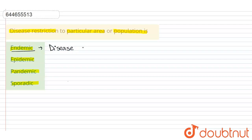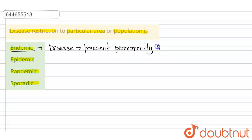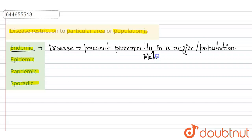Endemic describes a disease that is permanently present in a region or population. For example, malaria is an endemic disease to Africa, though nowadays through education and implementing countrywide strategies, the cases of malaria are falling.